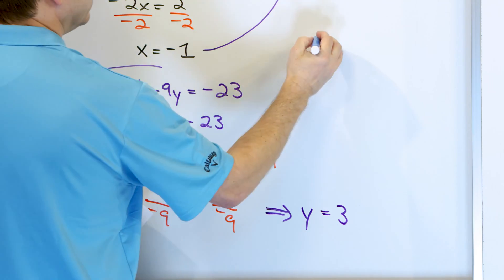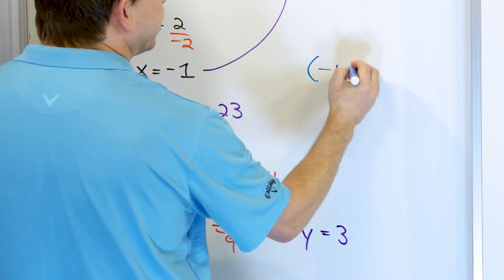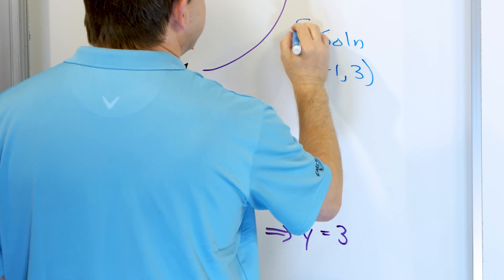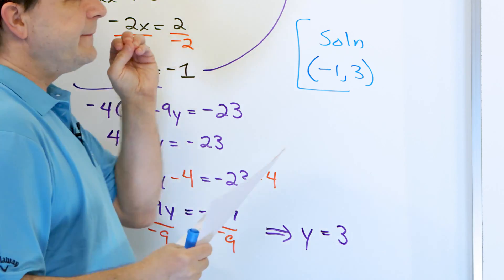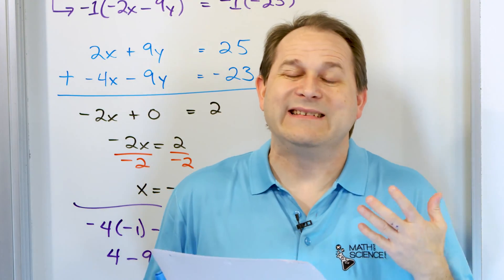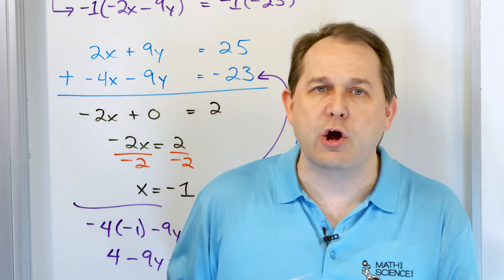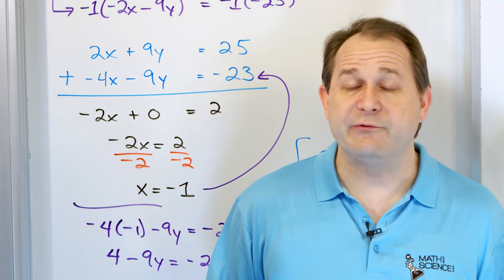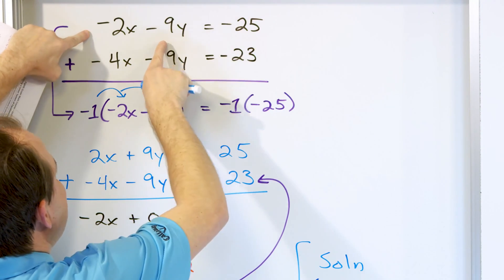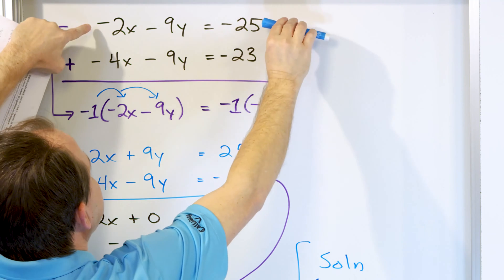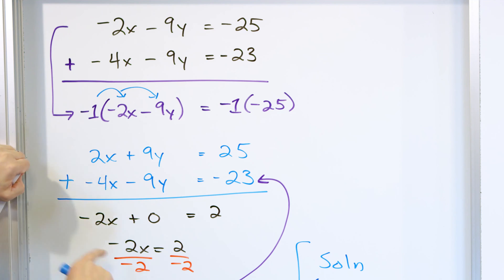So at the end of the day, an x value of negative 1 and a y value of positive 3 is the solution: the point negative 1, comma 3. This procedure follows exactly what we did before — we're still adding the equations. The only thing is, because you know you can multiply an equation by anything you want on both sides, we choose to multiply by negative 1 because we have a 9y in both equations.